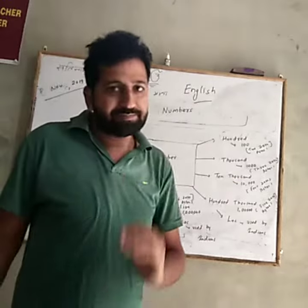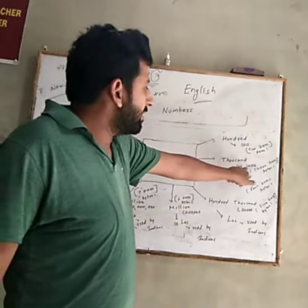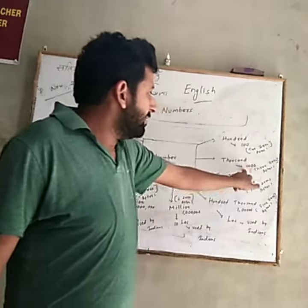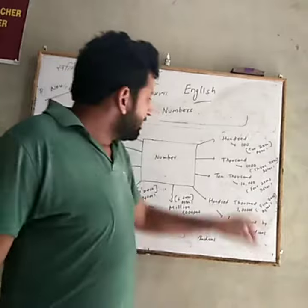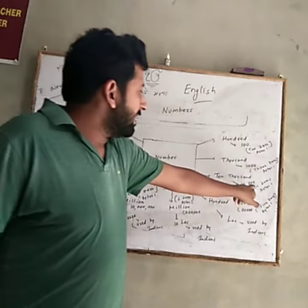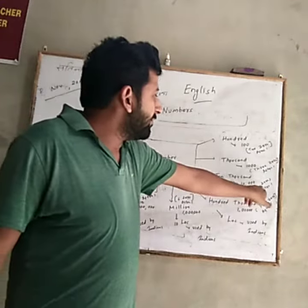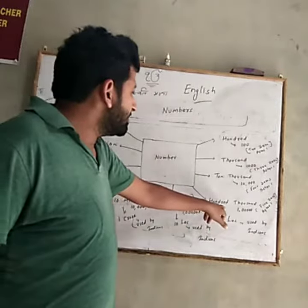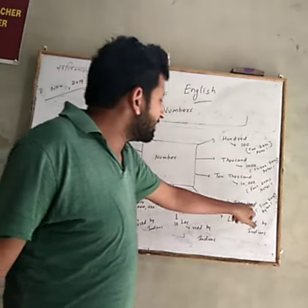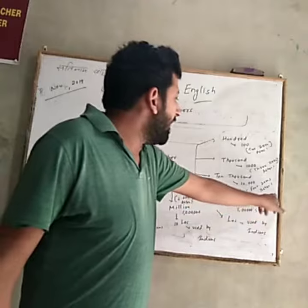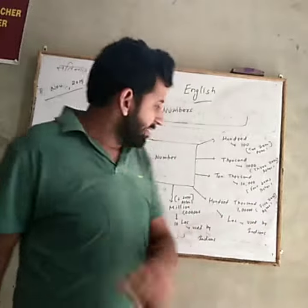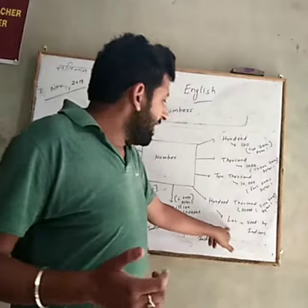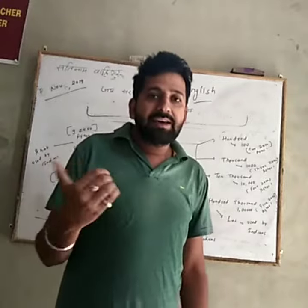The second number is thousand, and there are three zeros after one. Then ten thousand — there are four zeros after one. The next word is hundred thousand — there are five zeros after one. Indians write 'one lakh' for this.